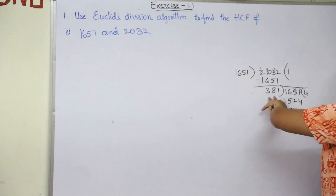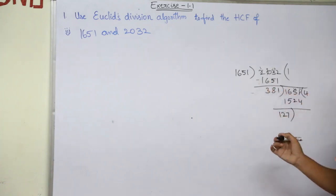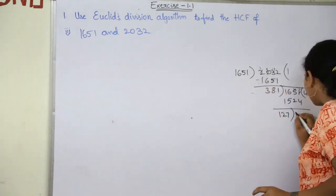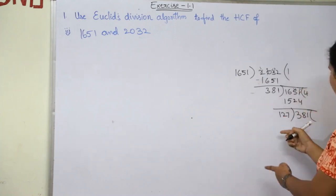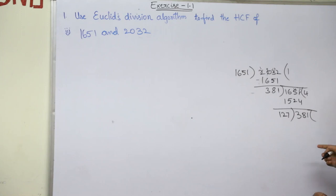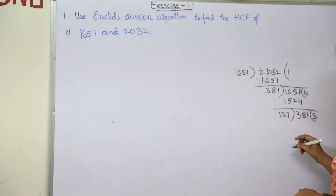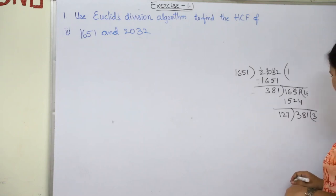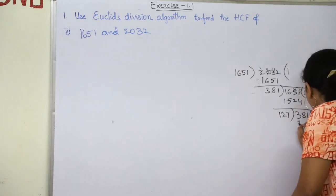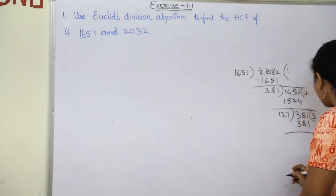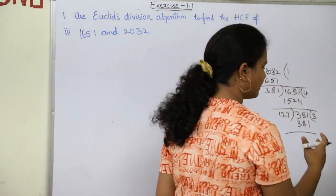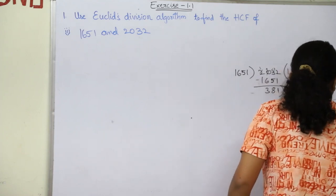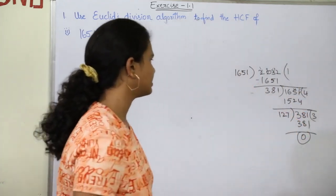Now just divide 381 with 127. So 381 divided by 127 — let's go with 3 times. 127 into 3: 3 ones are 3, 3 twos are 6, giving 381. So 381 divides correctly and the remainder will be 0. Therefore we got the remainder as 0.